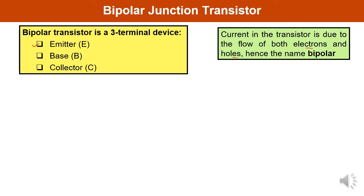The emitter is denoted by E and is an outer region — it may be situated on either side of the transistor. The function of the emitter is to inject charge carriers into the base. Since the emitter has to supply a large number of charge carriers, it must be heavily doped.